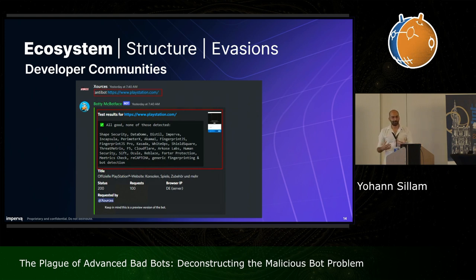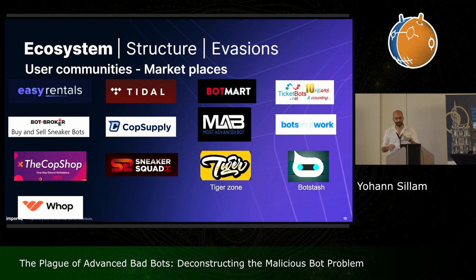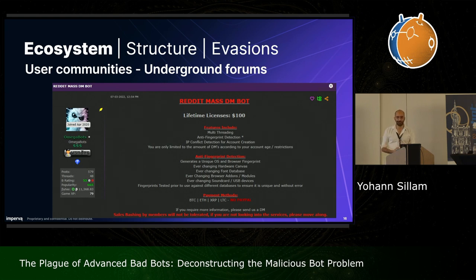It's not only a place for them to share information, but also provides services. For example, Scraping Enthusiasts gives the ability to test which security solutions are protecting a specific URL address. There are also user communities — marketplaces like Tidal and Bot Mart, which share more than 100,000 members each. Some marketplaces are more specific to a type of bot, like ticket bots. Some are only on Discord, some for rental, some for rental-purchase. Investigating underground forums is also very useful — for example, Reddit mass direct message bots advertised on hacking forums, mentioning multi-threading or anti-fingerprint detection.